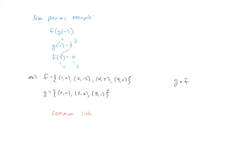Looking at the example with function f and g, we're going to figure out g circle f, which means we need to start with f. I can see that 1 maps to 2. As I transition to function g, my y becomes the x, which then maps to 6. So the first ordered pair of g circle f would be the point (1, 6).